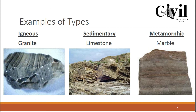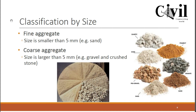If we classify aggregates on the basis of size, we have two types: fine aggregates and coarse aggregates. Fine aggregates have a size smaller than 5 mm — for example, sand has a size less than 4.75 mm. Coarse aggregates, on the contrary, have a size greater than 4.75 mm or 5 mm.